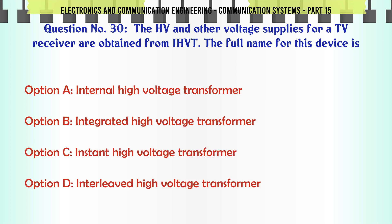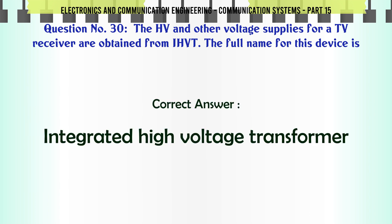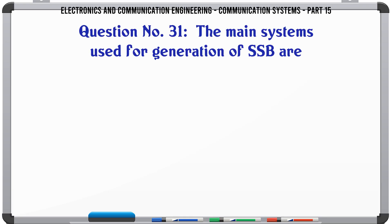The HV and other voltage supplies for a TV receiver are obtained from IHVT. The full name for this device is: A internal high voltage transformer, B integrated high voltage transformer, C instant high voltage transformer, D interleaved high voltage transformer. The correct answer is integrated high voltage transformer.